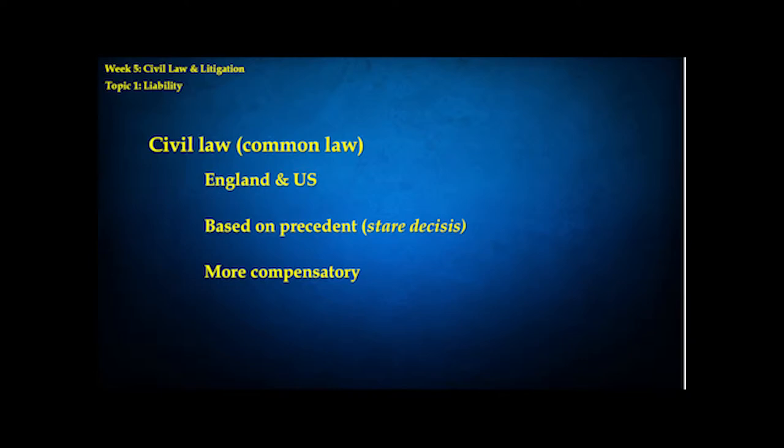This system of law is based on precedent rather than on prohibitions. There's no body of legal rules that civil courts enforce. Instead, people come to the courts with a conflict or dispute. If the issue has never been resolved by the court before, the judge has to make a decision. But once that decision is made, any judge handling a similar dispute in the future is supposed to match that original precedent. The formal Latin term for this is stare decisis — standing on precedent.